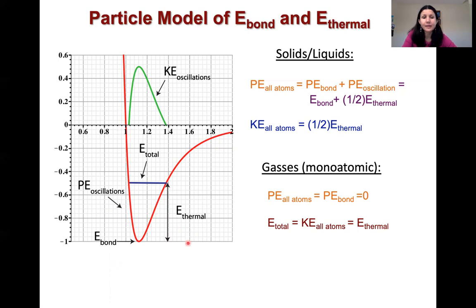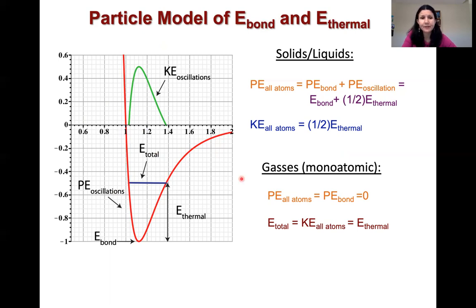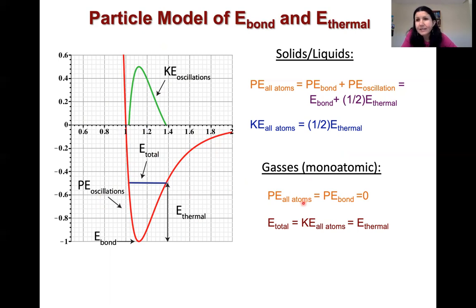We can name that part of potential energy the potential energy due to oscillations — it's the bond energy plus half of thermal energy. When you add some total energy, half of it goes to kinetic energy and half goes to potential energy. The kinetic energy is the other half of that thermal energy. So as we increase thermal energy, we increase the kinetic energy by half of that amount, and half goes to the potential energy of oscillation. For gases it simplifies: there's no bond energy and no potential energy from oscillations — only kinetic energy.